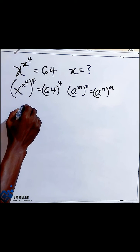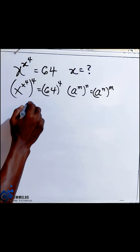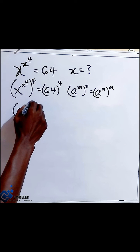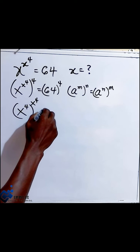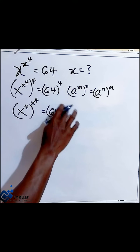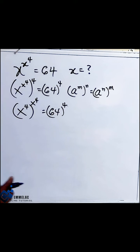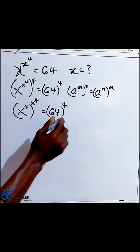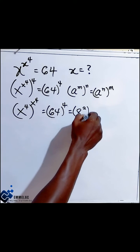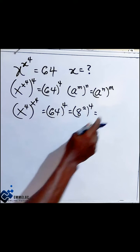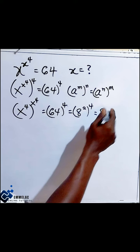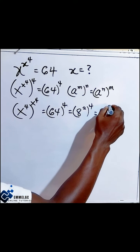So here we have x raised to the power of 4. Now r raised to the power of x raised to the power of 4 will give us 64 raised to the power of 4. This also can be rewritten as 8 raised to the power of 2, raised to the power of 4, which can also give us 8 raised to the power of 8.